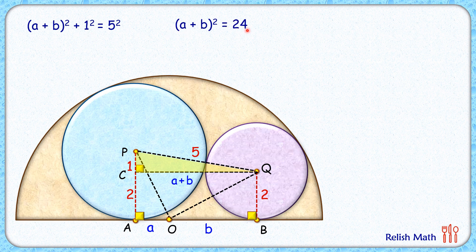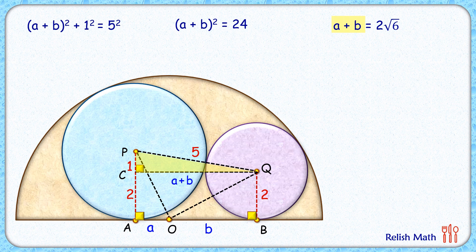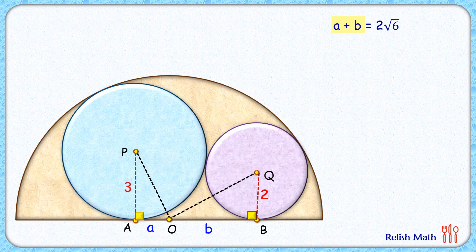Applying Pythagoras' theorem, we get (a+b)² + 1² = 5². Taking 1² to the other side, (a+b)² = 24. Taking the square root of both sides, a plus b equals 2√6 centimeters. Now we'll find the individual values of a and b in terms of r, and use this a plus b value to solve for r.